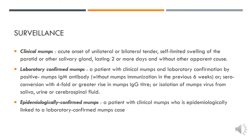Surveillance is another strategy towards disease elimination. A clinical mumps case is defined as acute onset of unilateral or bilateral self-limited swelling of the parotid or other salivary glands, lasting two or more days without any other apparent cause. A lab-confirmed case has clinical mumps plus lab confirmation by mumps IgM antibody, seroconversion with a fourfold or greater rise in mumps IgG titre, or isolation of mumps virus from saliva, urine, or CSF. An epidemiologically confirmed case is a patient with clinical mumps who is epidemiologically linked to a lab-confirmed case.